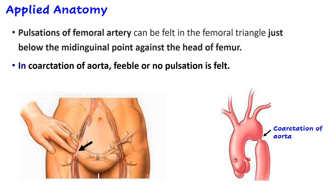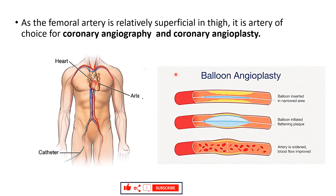The femoral artery is relatively superficial in the thigh and is therefore the artery of choice for coronary angiography. A catheter is inserted through the femoral artery, a radiopaque dye is injected, and it travels from the femoral artery to the external iliac artery, common iliac artery, abdominal aorta, thoracic aorta, and ascending aorta, filling the coronary arteries with dye visible on radiograph.